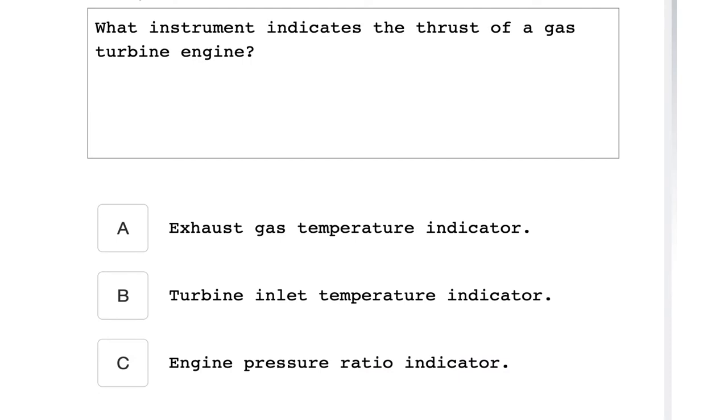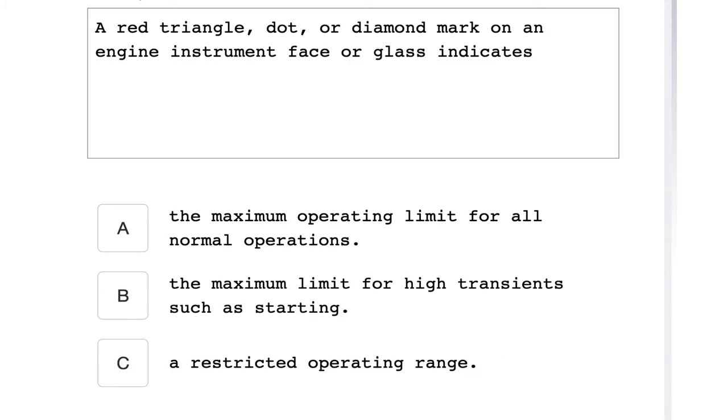What instrument indicates the thrust of a gas turbine engine? Engine pressure ratio indicator. A red triangle, dot, or diamond mark on an engine instrument face or glass indicates the maximum limit for high transients such as starting.